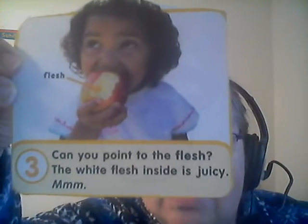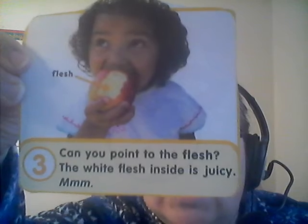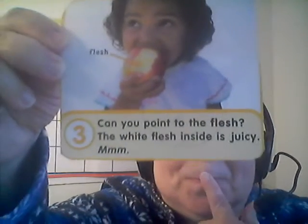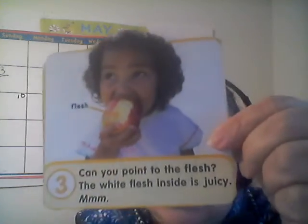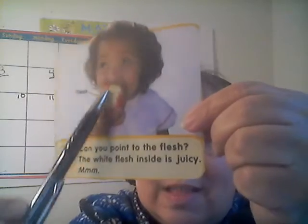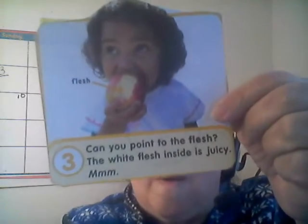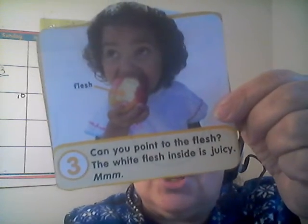Can you point to the flesh? What's the flesh? The white flesh is inside. It's juicy. You see the inside of the flesh? It's the flesh — that's the juicy part, the white juicy part inside of the apple. That's called the flesh.